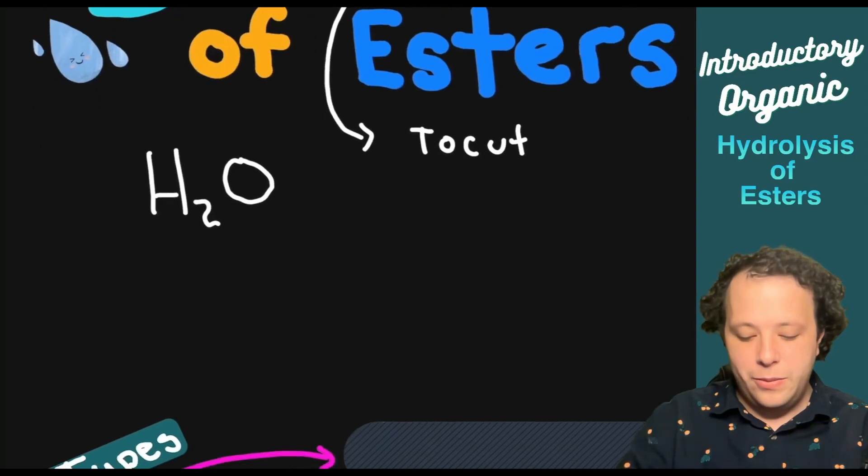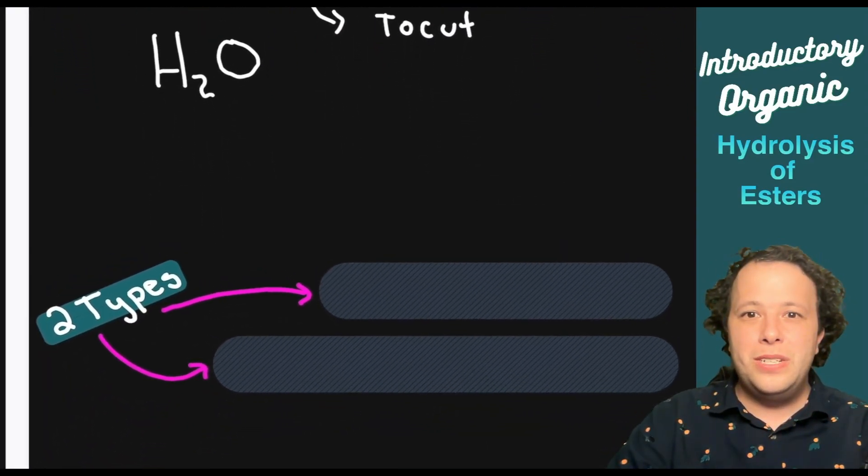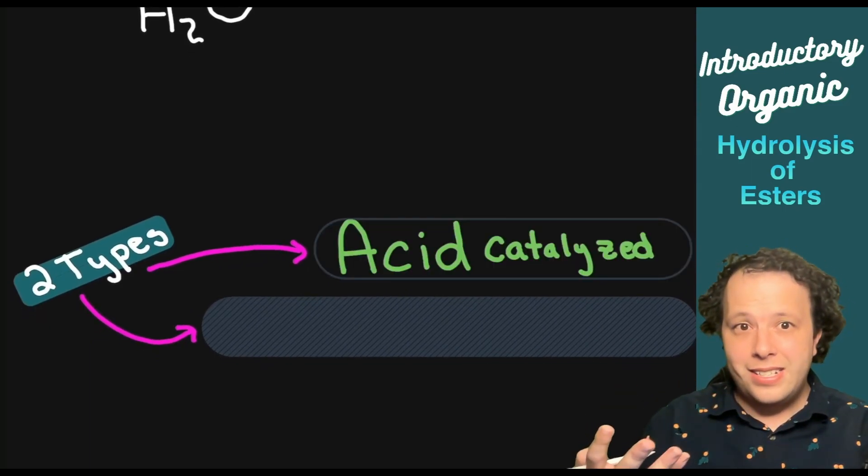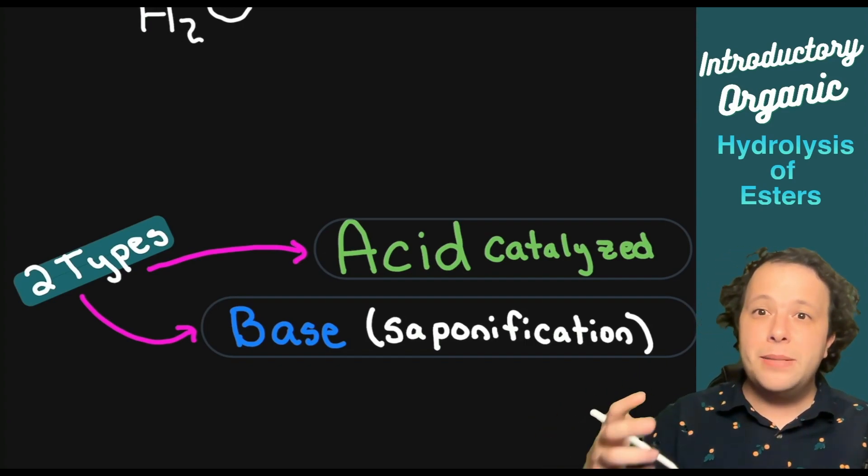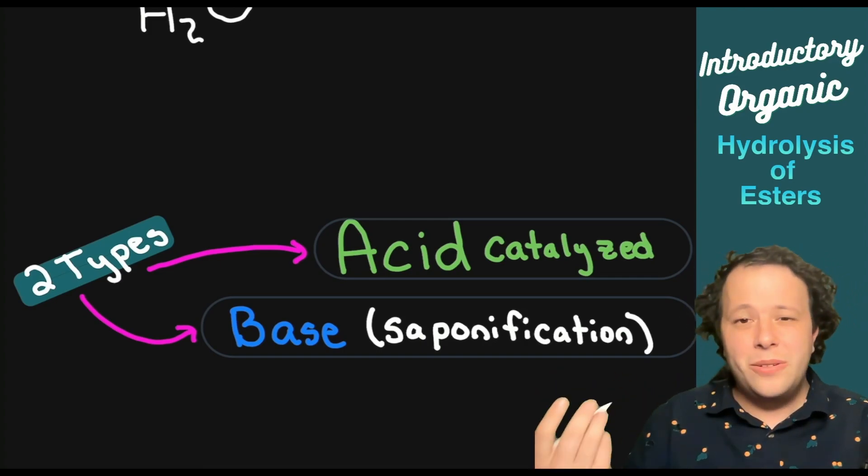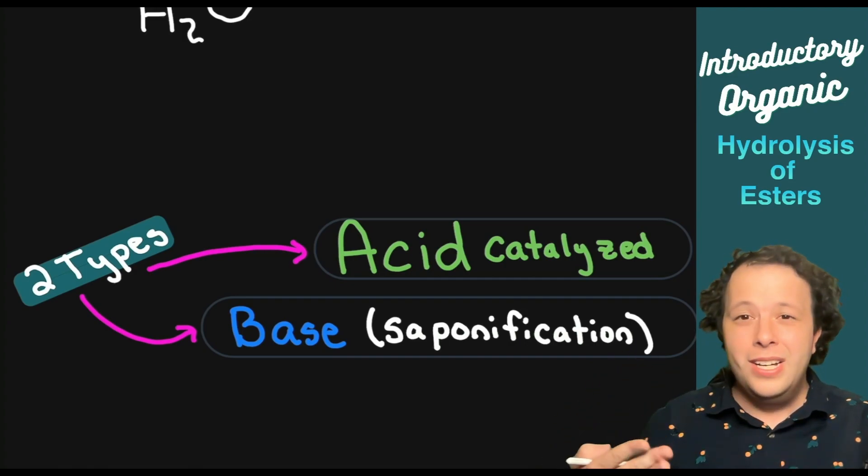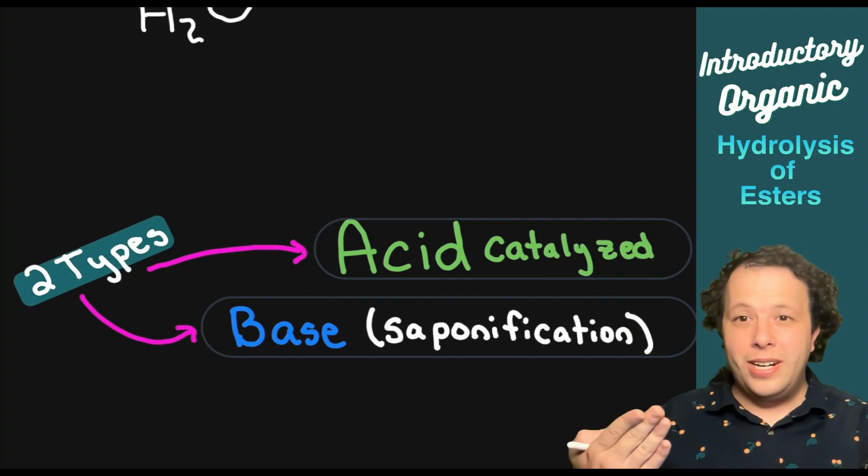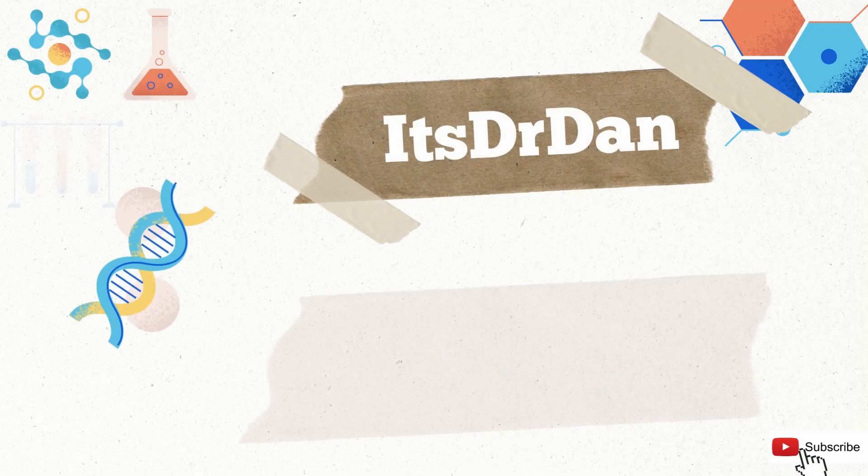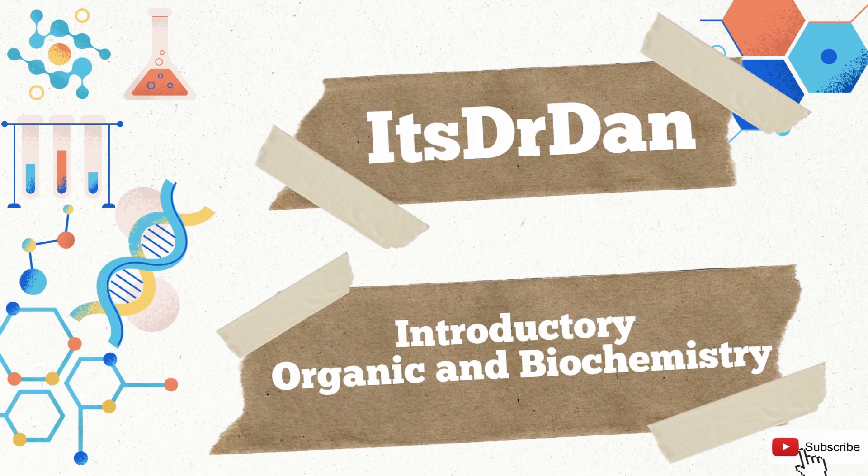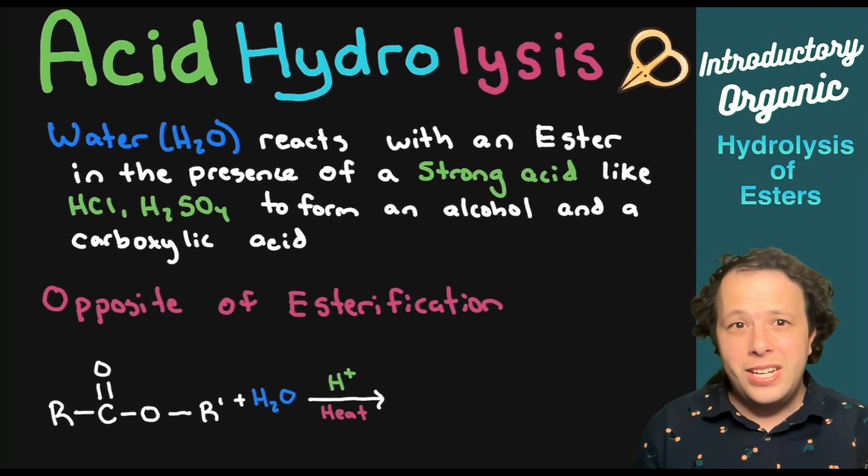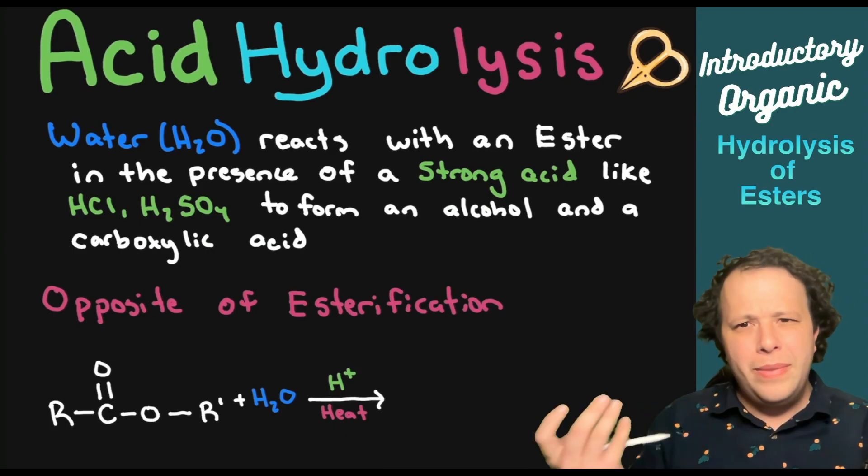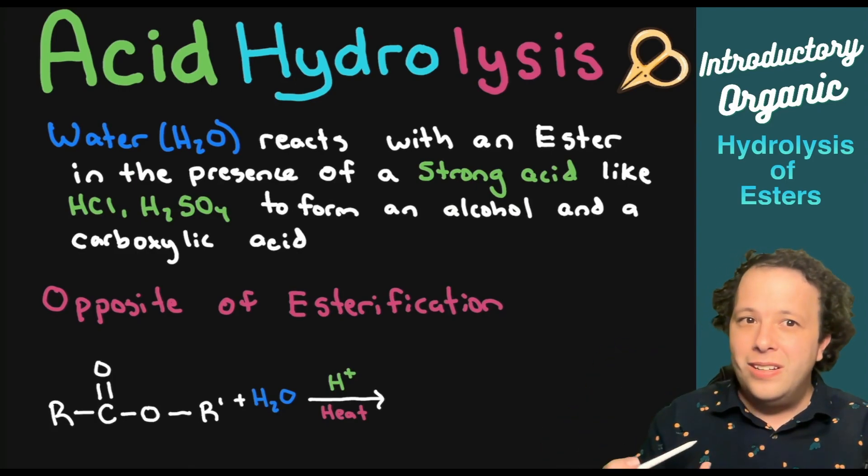Now depending on how we can cut with water, this can exist in two different ways. We have acid-catalyzed hydrolysis, and then we also have base-catalyzed hydrolysis, also known as saponification, which is making soap. Acid hydrolysis is when water reacts with an ester in the presence of a strong acid like HCl, H2SO4, or HNO3. And when it does that, it's going to make it into the original components that made the ester in the first place, which is an alcohol and a carboxylic acid.